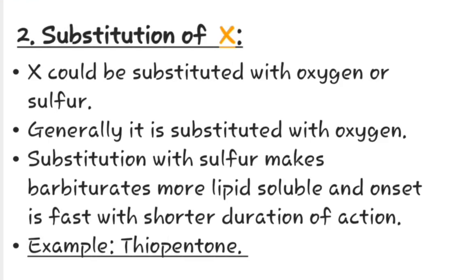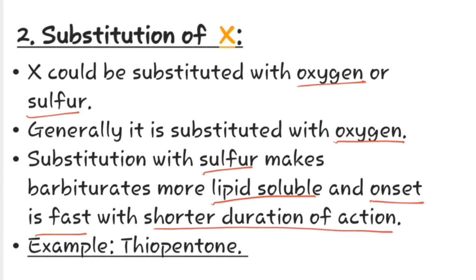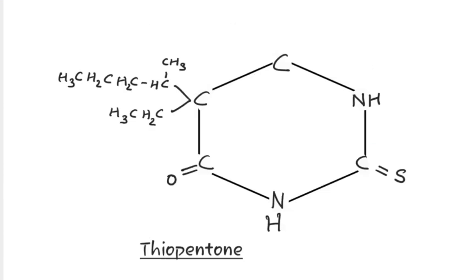Now let us study about substitution of X. X would be substituted with oxygen or sulfur. Generally it is substituted with oxygen, but substitution with sulfur makes the barbiturate more lipid soluble, and the onset is fast with a shorter duration of action. The example for this is thiopental, which contains sulfur at the 2nd position.